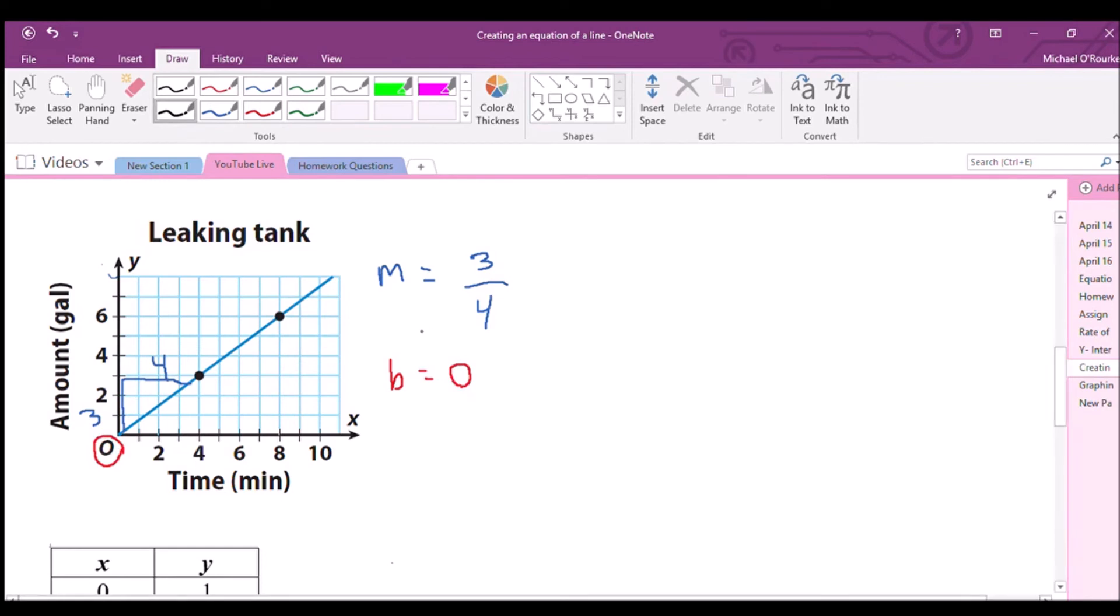So we have our M. We have our B. Our B value here is going to be zero. So we can fill in our equation. So our M value is three over four. And our B value is zero. Now kind of silly for us to add zero onto something. So we actually don't need that. So we're just going to erase this back part. And there's our equation. Y equals three X.